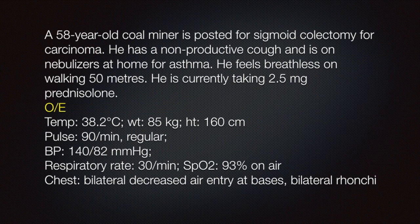Problem number 4. We might get a full-fledged clinical scenario like this. A 58-year-old coal miner is posted for sigmoid colectomy for carcinoma. He has a non-productive cough and is on nebulizers at home for asthma. He feels breathless on walking 50 meters. He is currently taking 2.5 milligrams of prednisolone. His examination findings are also given. You may please note that his chest signs are present: bilateral decreased air entry at bases and bilateral bronchi. So what do you infer from his history? He is a known case of asthma. He has a recurrent history of non-productive cough. He is on bronchodilators and steroids and he has bilateral bronchi. Everything points to an expiratory flow limitation of obstructive lung disease even before going to the PFT values.